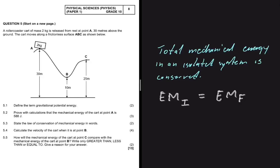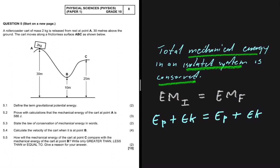We're going to answer this entire question using the law of conservation of mechanical energy. The total mechanical energy in an isolated system is conserved — that is to say that the initial mechanical energy is equal to the final mechanical energy in the absence of external forces. But what is mechanical energy? That is the potential energy plus the kinetic energy.